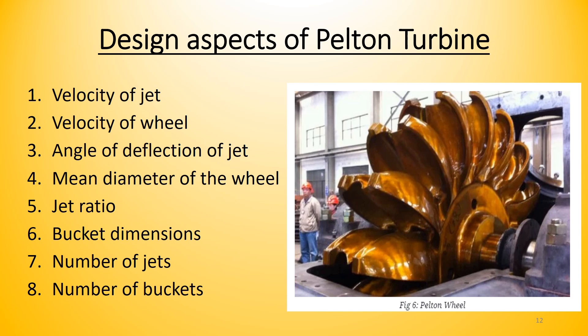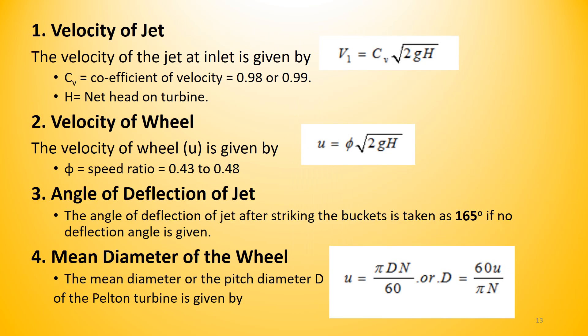Coming to the design aspects of the Pelton wheel, the important parameters are: velocity of the jet, velocity of the wheel, angle of deflection, mean diameter of the wheel, jet ratio, bucket dimensions, number of jets, and number of buckets. The velocity of the jet at inlet v₁ is given by: v₁ = Cv × √(2gH), where Cv is the coefficient of velocity (0.98 to 0.99) and H is the net head. The velocity of the wheel or runner, u, is given by: u = φ × √(2gH), where φ is the speed ratio.